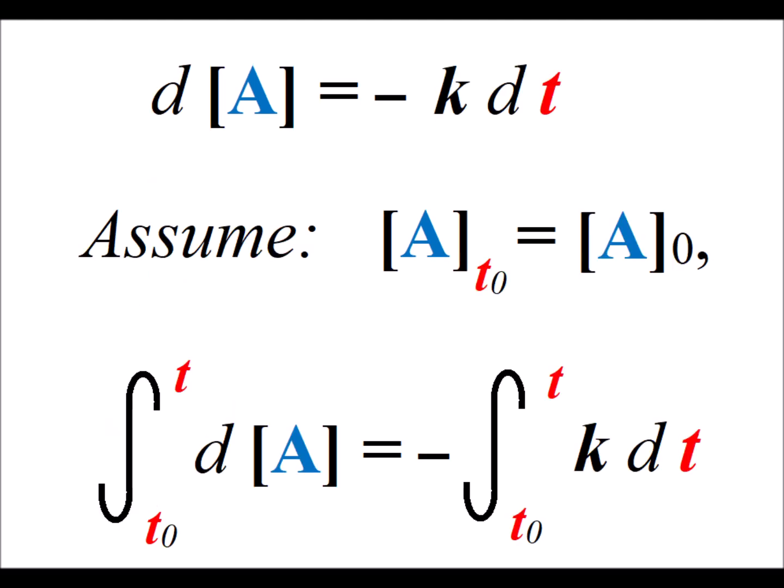If we multiply each side of the expression by dt, we separate the variables. We get that d[A] is equal to minus k times dt.